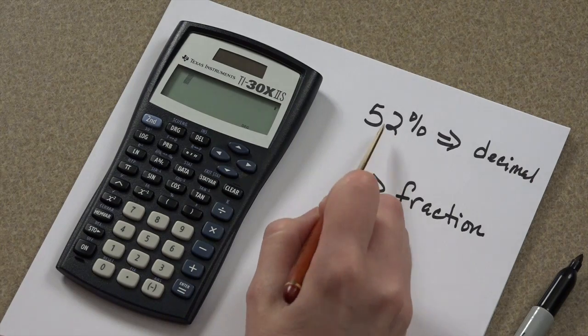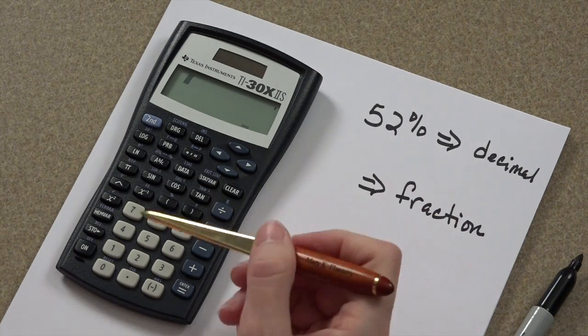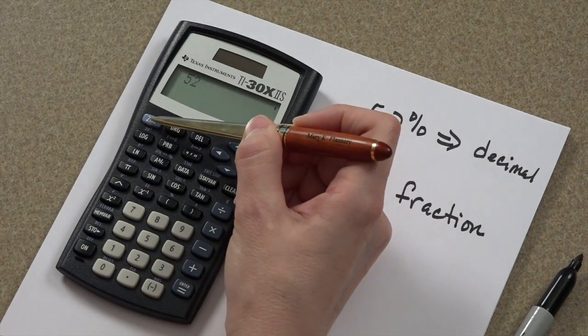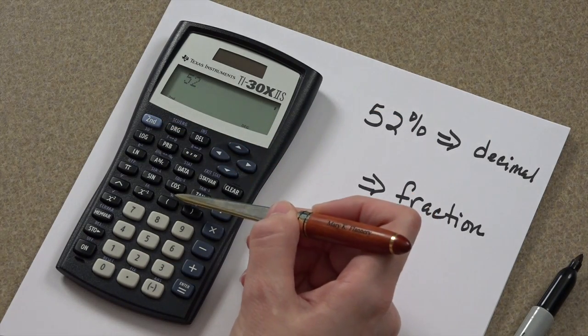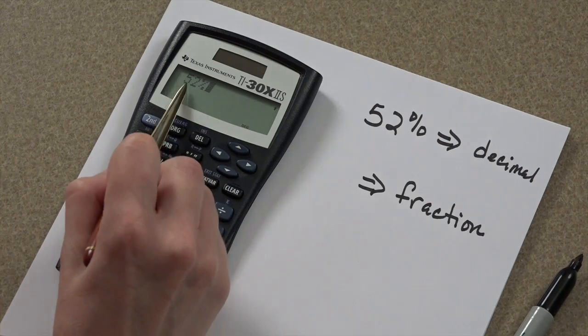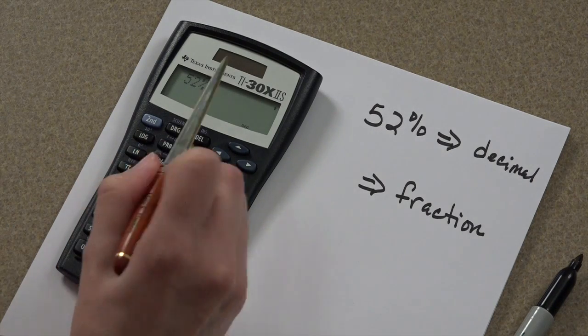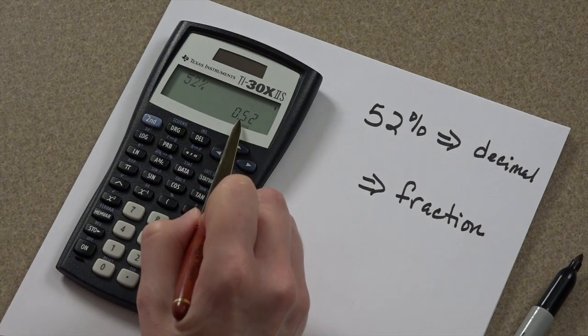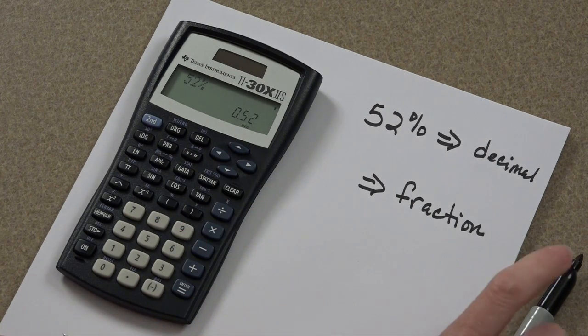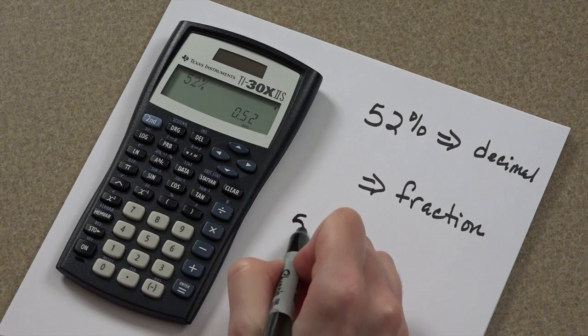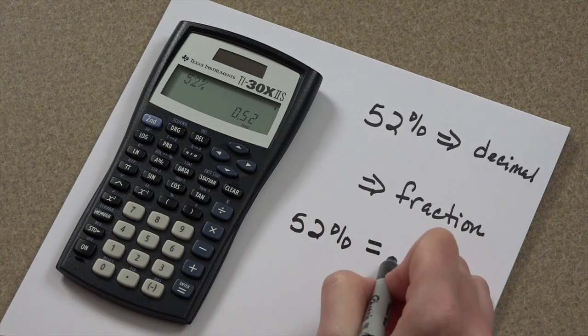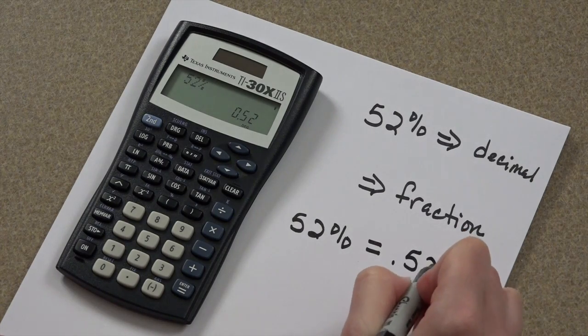So let's enter 52%. 5, 2, the second key, and then the percent option. That's what it looks like on your screen. When you press equal, the decimal equivalent automatically shows up. So 52% is the same as 0.52.